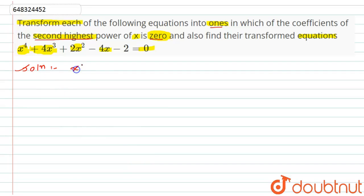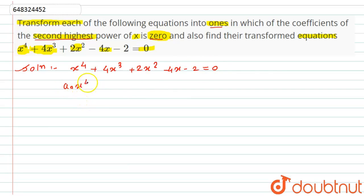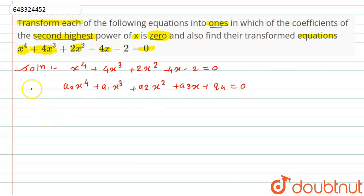First of all, we write the equation: x⁴ + 4x³ + 2x² − 4x − 2 = 0. On comparing this with the general form a₀x⁴ + a₁x³ + a₂x² + a₃x + a₄ = 0, we will diminish equation 1 by h.